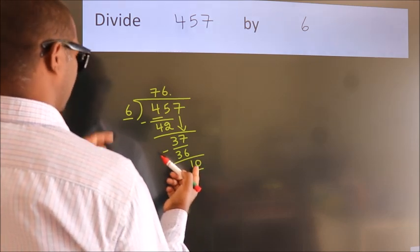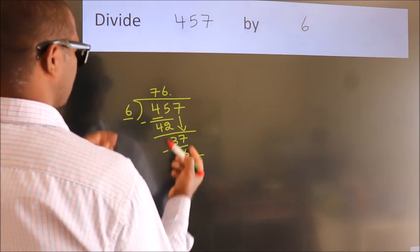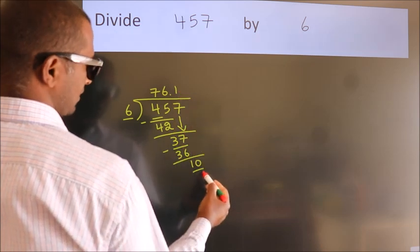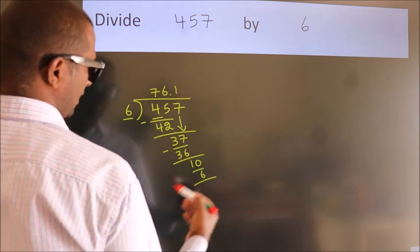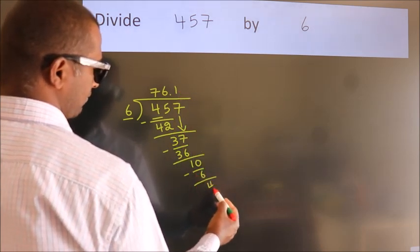A number close to 10 in 6 table is 6 times 1 equals 6. Now, we subtract. We get 4.